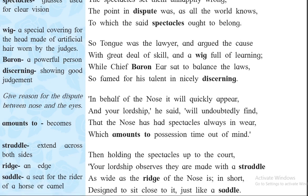After that, the second stanza. 'Tongue was the lawyer and argued the cause with a great deal of skill and a wig full of learning.' Now, what does wig represent here? Wig represents a head full of learning. A wig is a special covering of the head made of artificial hair which is worn by judges. So here wig represents the judge — a person who is very good at judgment, a very learned person. The figure of speech here is metonymy.